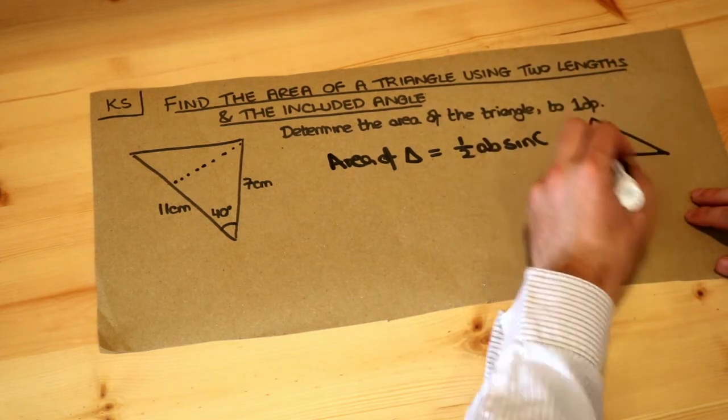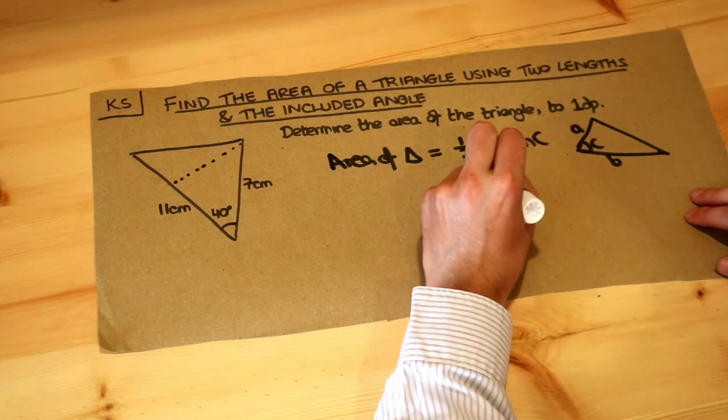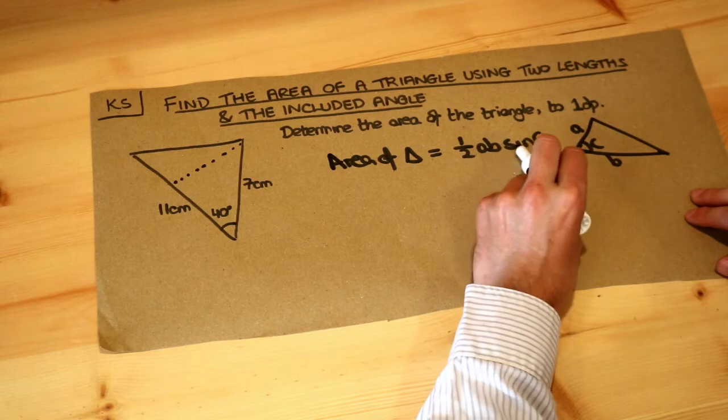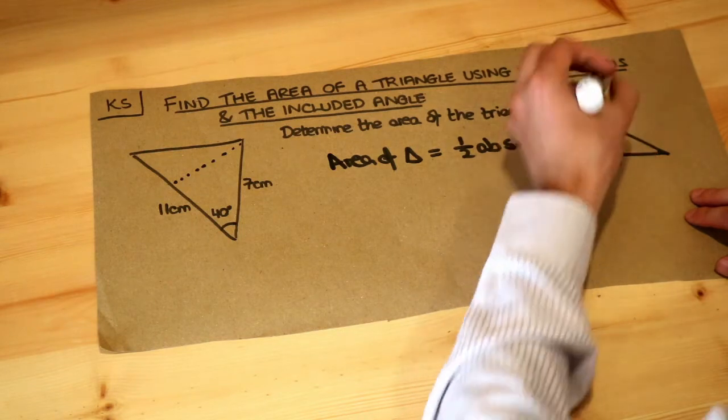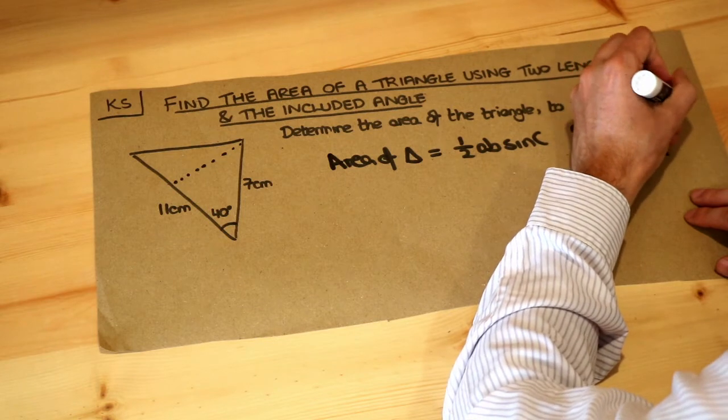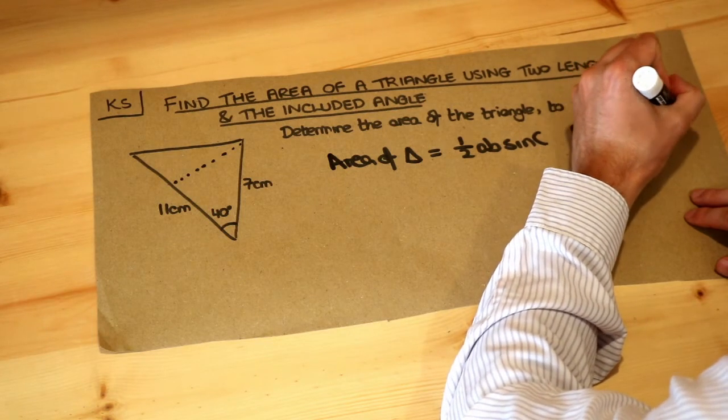But the way I remember it, I don't bother labeling the sides each time. I just remember it's half times the product of your two sides you're involving times the sine of the angle between them. This is known as the included angle because it's the angle between the two sides of interest.